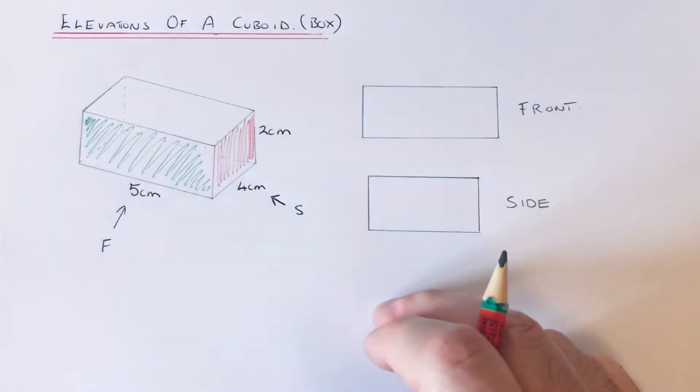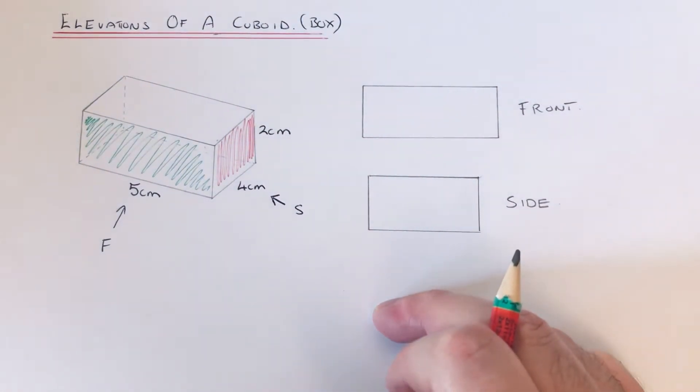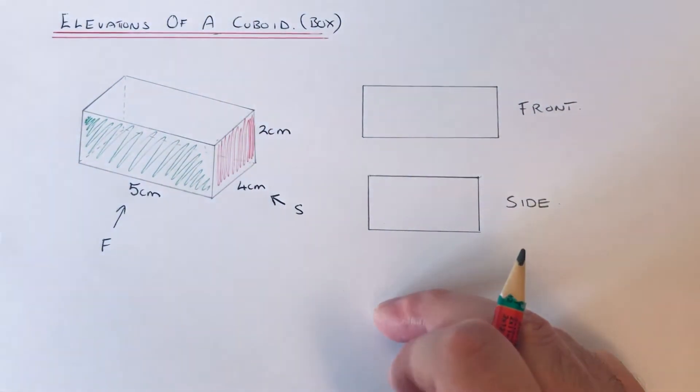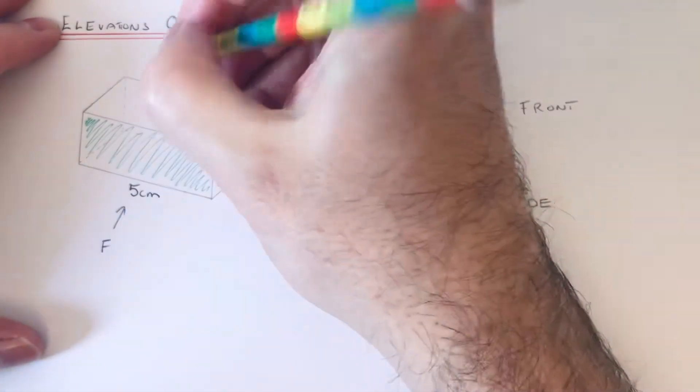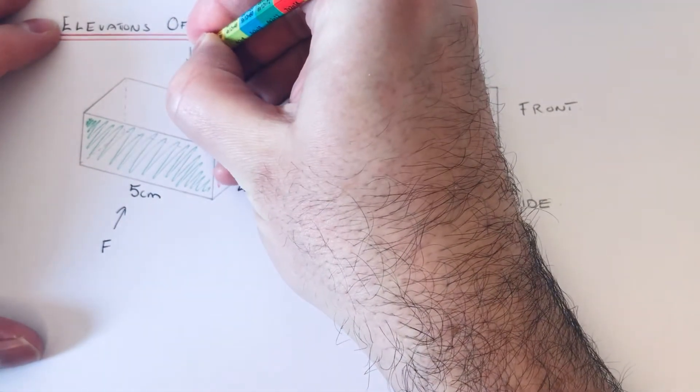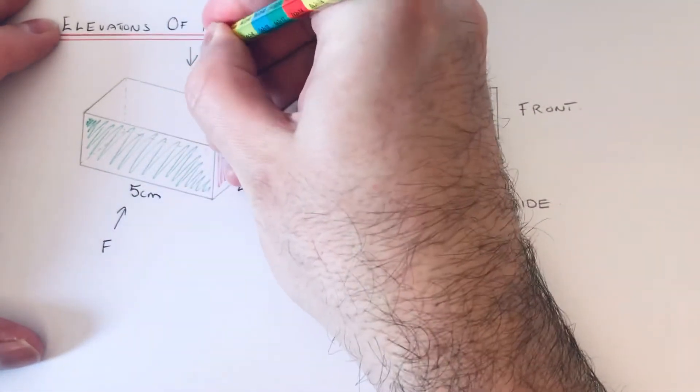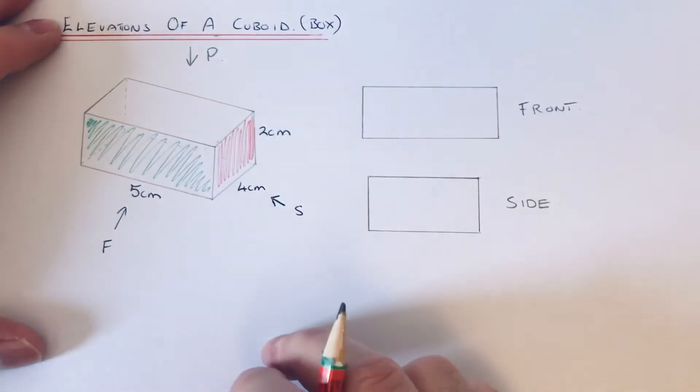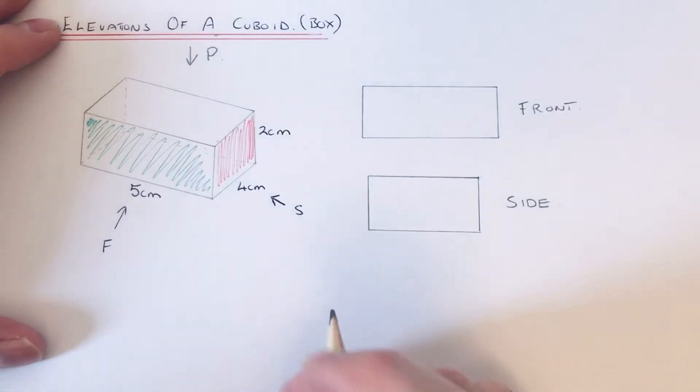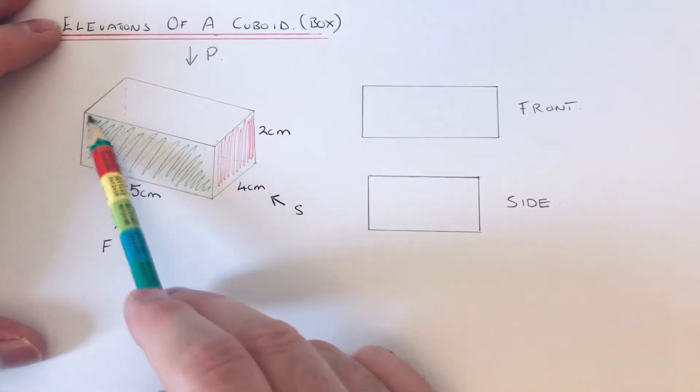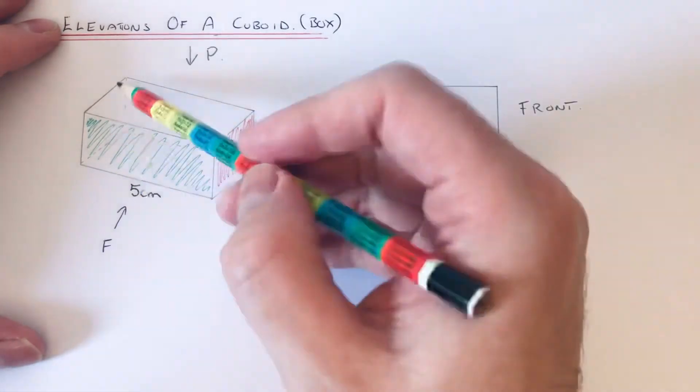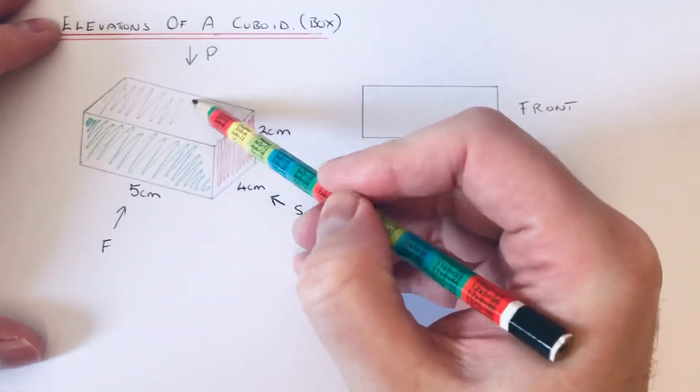And then the hardest one to do is the plan elevation. The plan is what you'd see if you're looking from the top of the box, if you're looking down onto it. It's a bit like the satellite view that you'd get on Google Maps. So what you'd see if you're looking from the top, you'd see this five by four rectangle here.